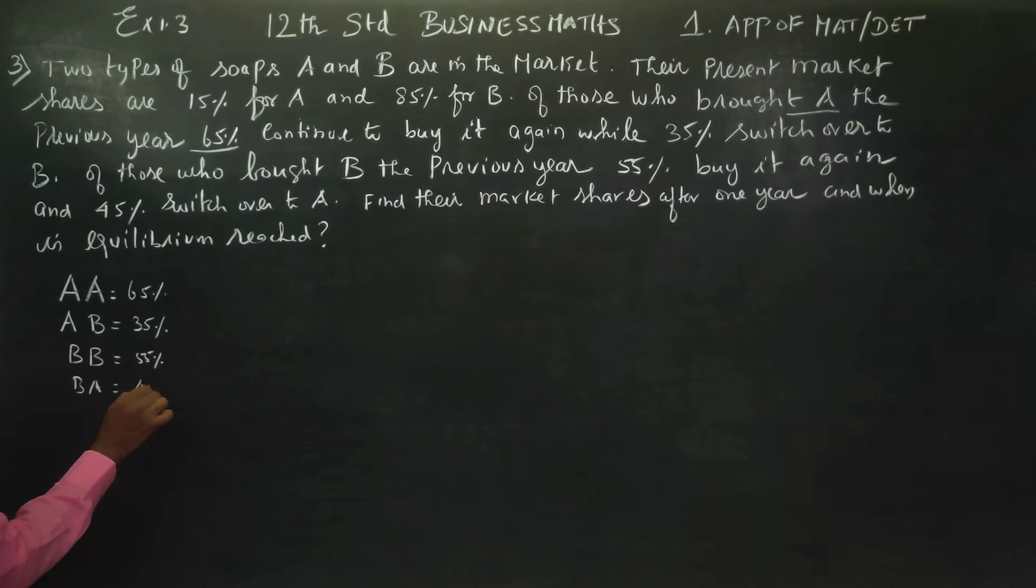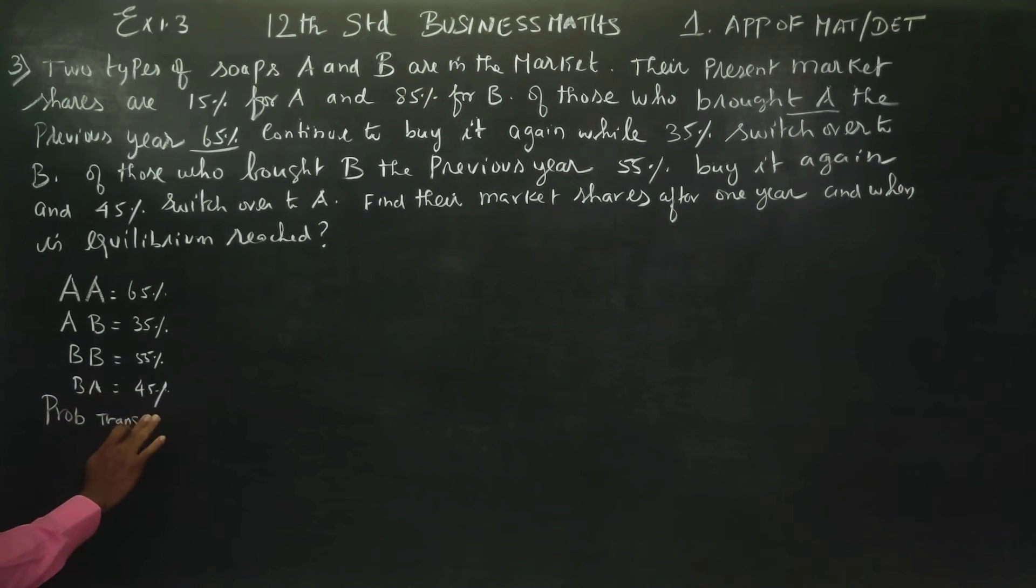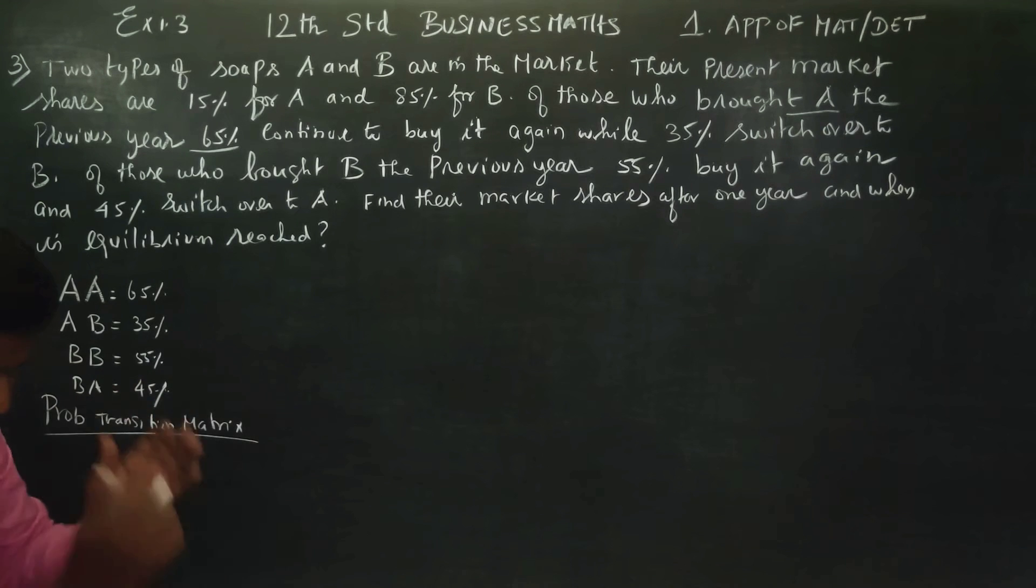First year, probability transition matrix. In the sum body year away, probability transition matrix, capital letter T.